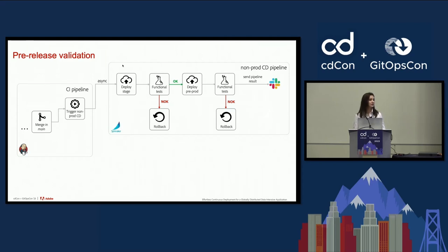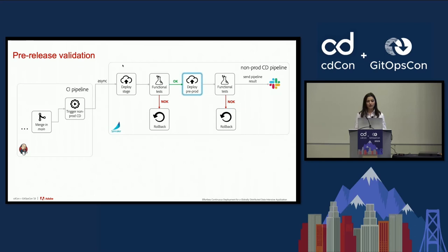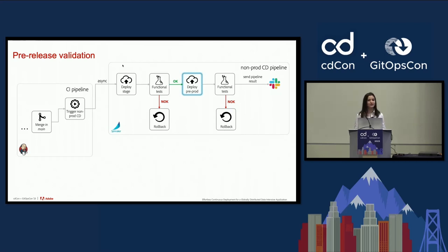Using Jenkins, we trigger Spinnaker pipelines that deploy the new version to stage and pre-prod. Functional tests are run against these environments. If they fail, both environments are rolled back automatically to the latest stable version, and the team is notified via Slack. We added an additional pre-production environment which is a shadow for production — it behaves exactly like production but doesn't receive live traffic. Since the application running there is connected to all production dependencies, we can functionally validate it as we would in production, but without actually pushing changes to production.